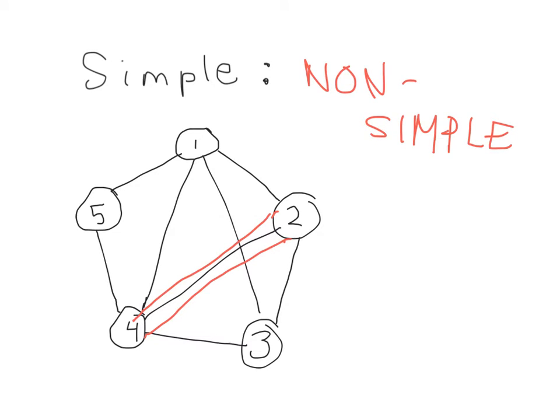Another thing that makes a graph non-simple is if it has something we call loops, which are edges that join a node to itself. So to decide whether a graph is simple or non-simple, you're looking for loops or parallel edges.